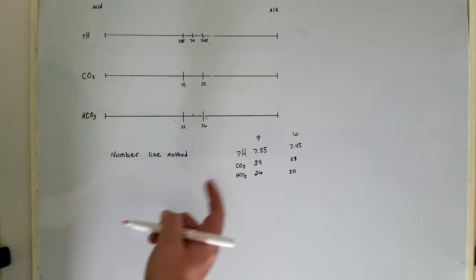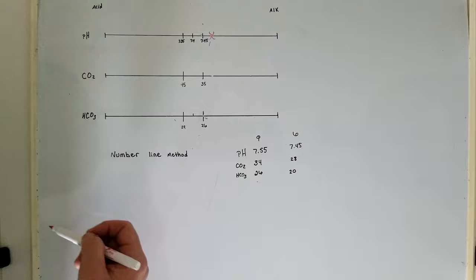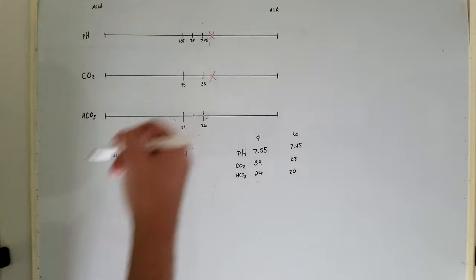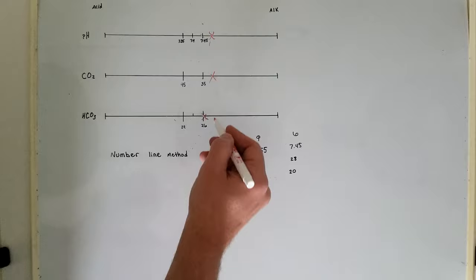I took question 9 and 6 from the worksheet. In question 9, the pH is 7.55, so it's on the alkalized side. The CO2 is 34, also on the alkalized side.